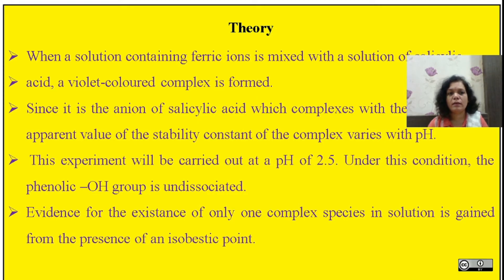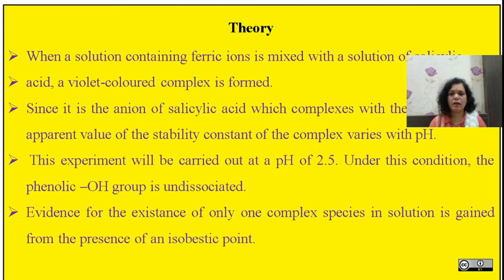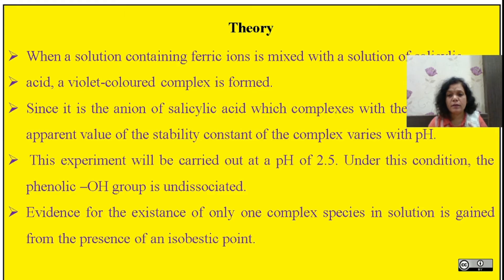We are going to take a solution containing ferric ions mixed with a solution of salicylic acid, which forms a violet color complex. The anion of salicylic acid forms a complex with the ferric ion, and we are interested in finding out the stability constant of this complex by measuring the color intensity using the spectrophotometer. To carry out this experiment, we need to keep the pH constant at pH 2.5 so that the complex remains steady and stable.